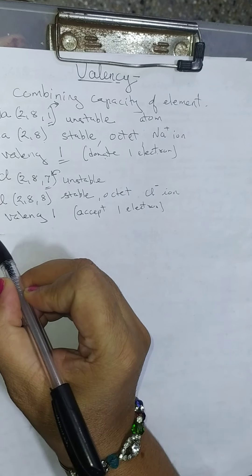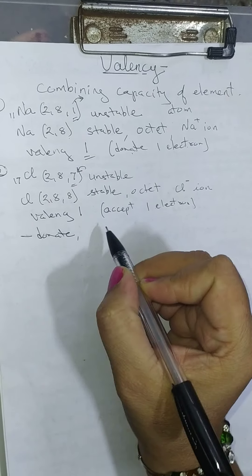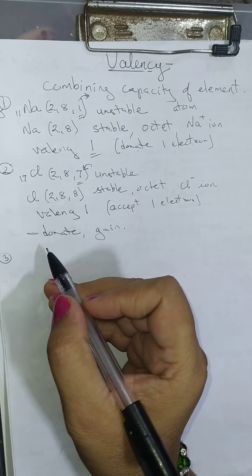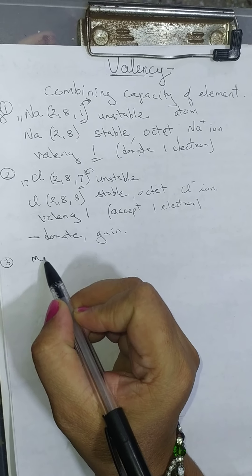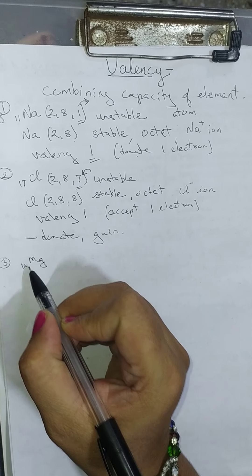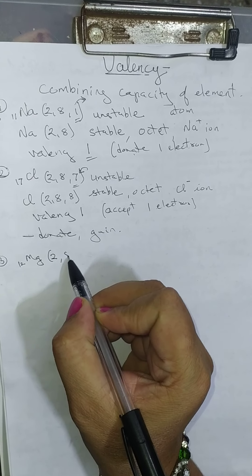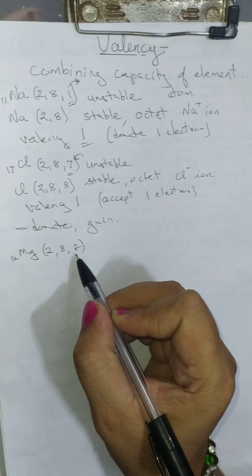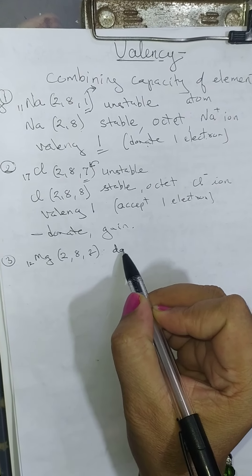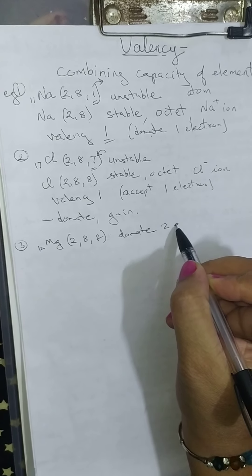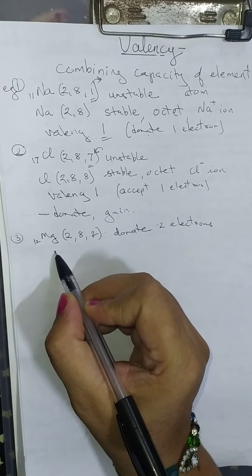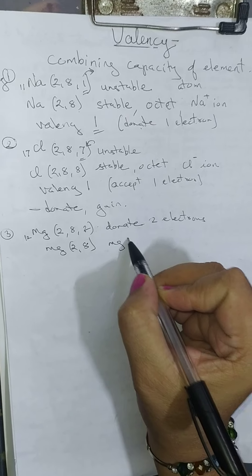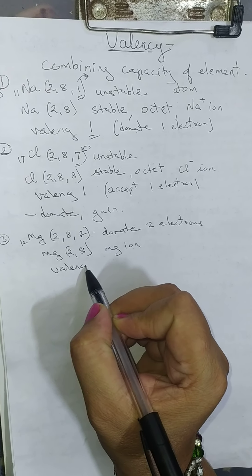To become stable, elements either donate or gain electrons. Let us take the example of magnesium. Its atomic number is 12, so its electronic configuration is 2, 8, 2. It has to become stable, so magnesium donates 2 electrons. By donating 2 electrons it becomes Mg²⁺ with configuration 2, 8 — this is the magnesium ion — and in this case the valency is 2.